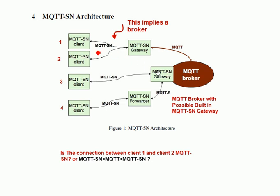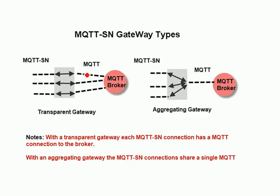So with two clients, there'd be two connections on the broker. And there's the aggregating gateway — in that case, with two clients connected, you'd only have one connection to the MQTT broker. Looking at the broker, you'd just see one connection for an aggregating gateway.